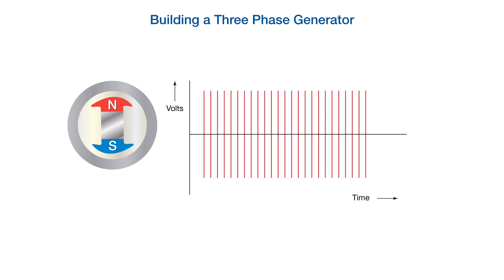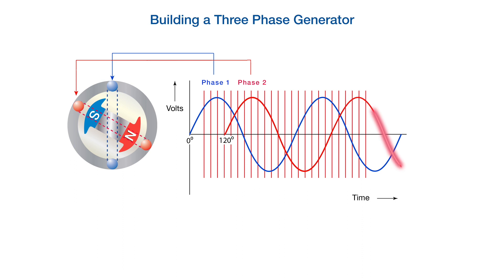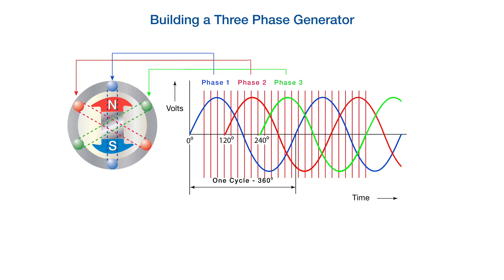Electrical power generated in a three-phase generator is expressed in a graph in terms of volts on the y-axis and time on the x-axis. We start with phase one coils, as for the single-phase arrangement. Now, phase two coil is added spaced 120 degrees from phase one. Then, to complete a three-phase generator, a third set of coils for phase three coil is spaced 240 degrees from the phase one coils. A full 360-degree turn represents one cycle over a time of one second.